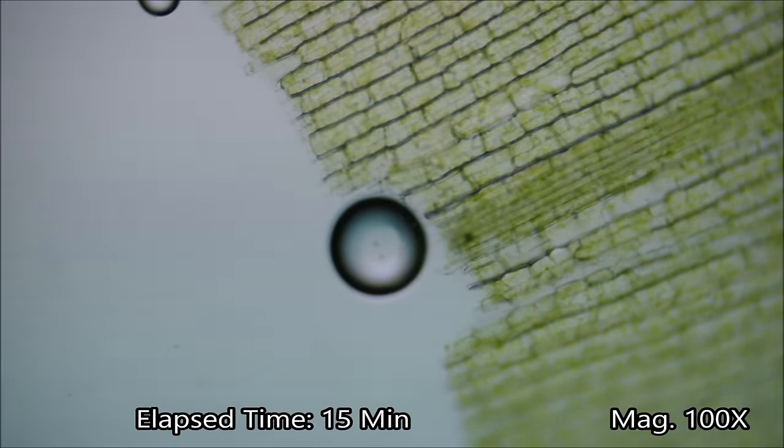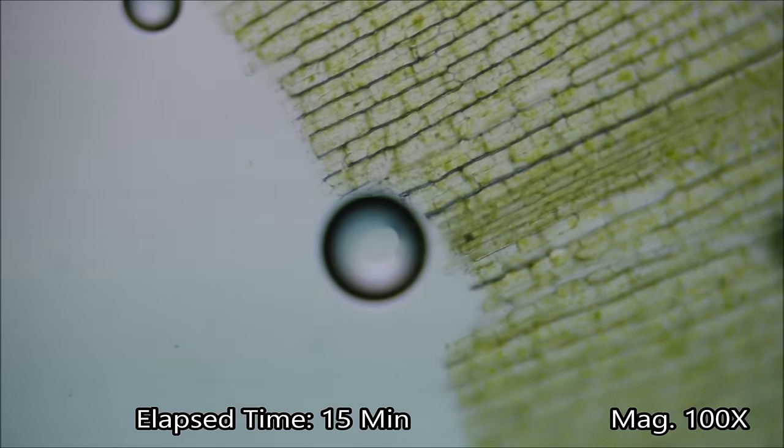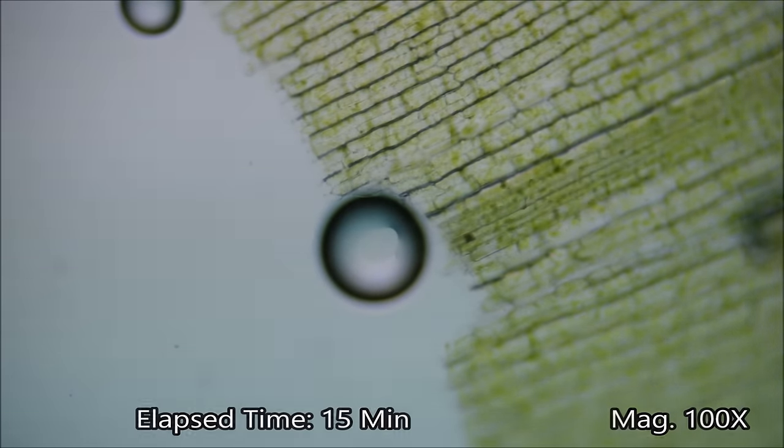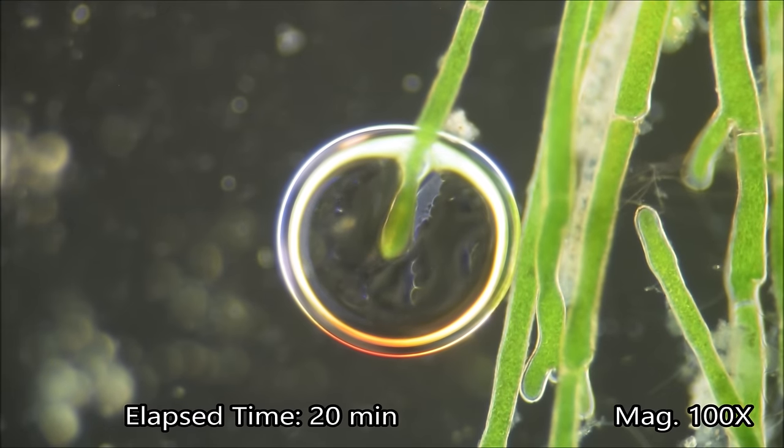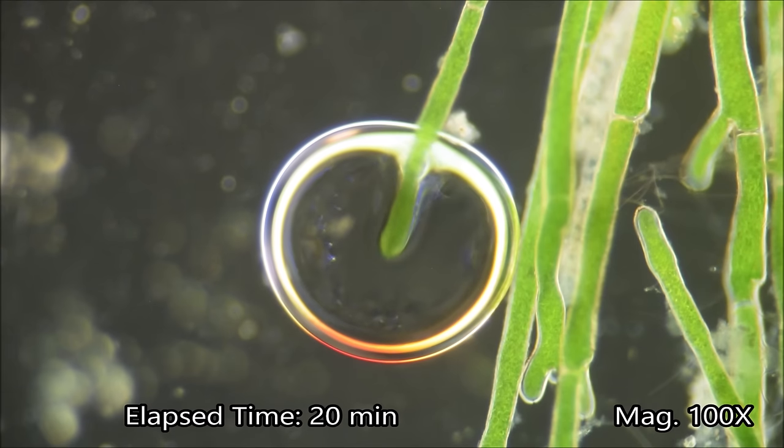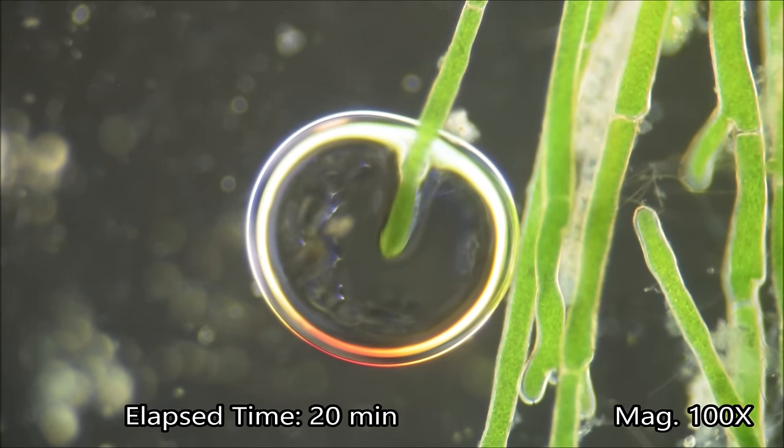Here we can see an oxygen bubble growing and the chloroplasts in the plant cells moving around. We see a lot more oxygen bubbles than carbon dioxide bubbles for a few reasons. Carbon dioxide or CO2 is more soluble than oxygen in water. This means carbon dioxide dissolves in water similar to how salt dissolves in water.